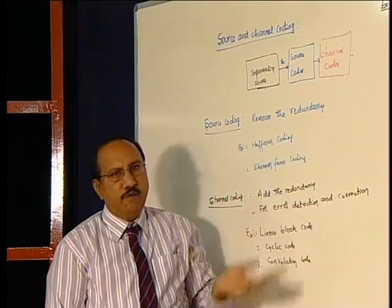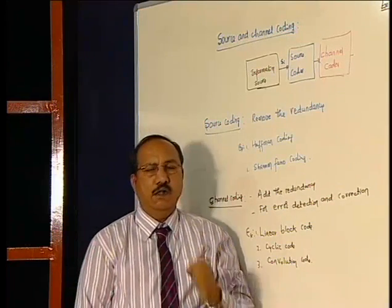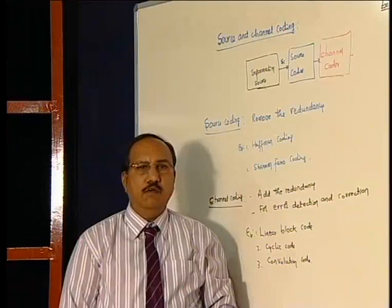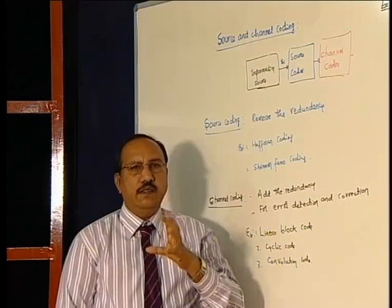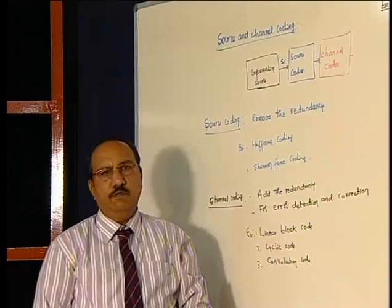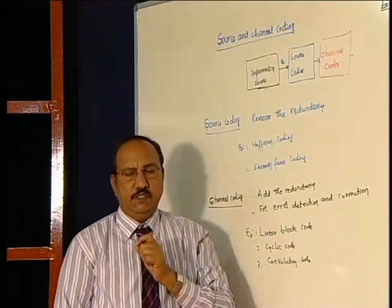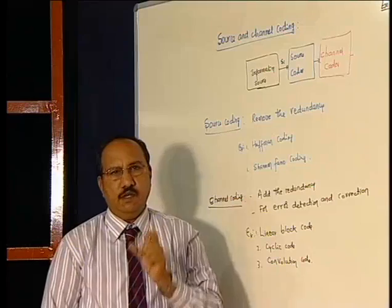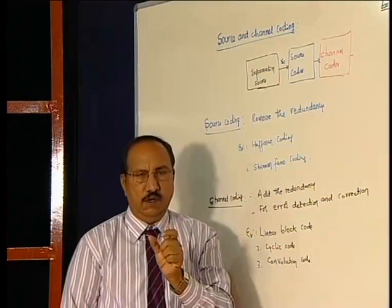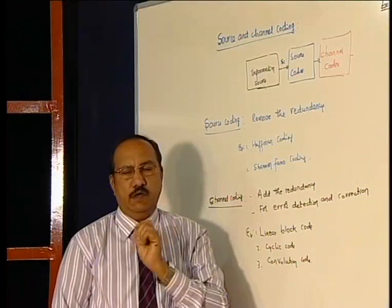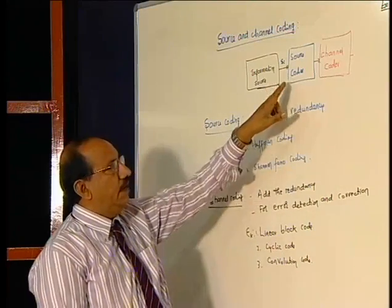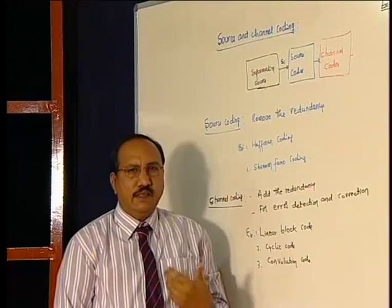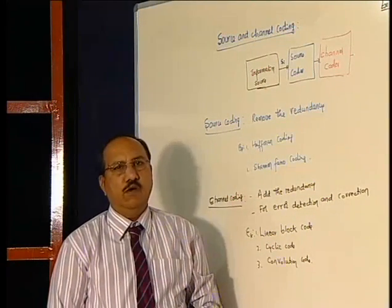Like you take alphabets, what will happen e to z? All symbols will not occur with equal probability. Taking that into consideration in Morse code, what we will do? A symbol which occurs frequently like e, will occur more frequently. For that we assign a short codeword, a dash dot, whereas any other codeword which occurs with less probability, for that we assign a long codeword.